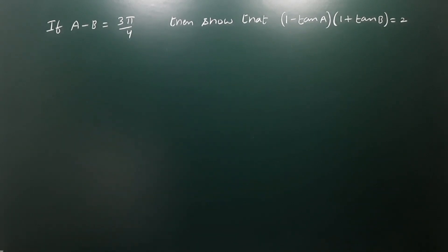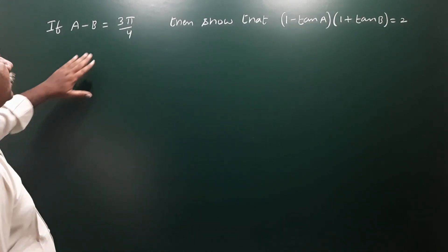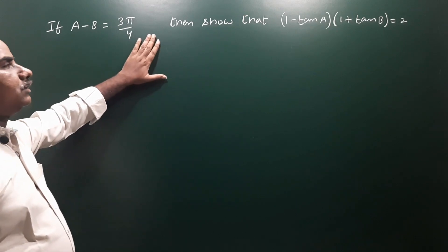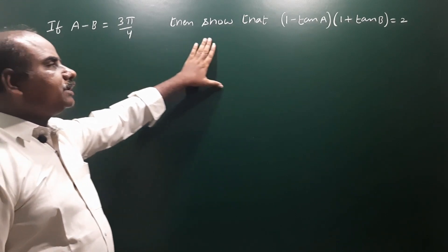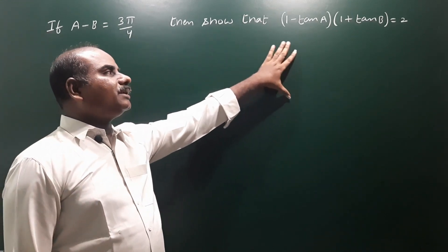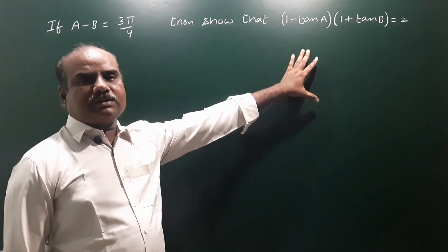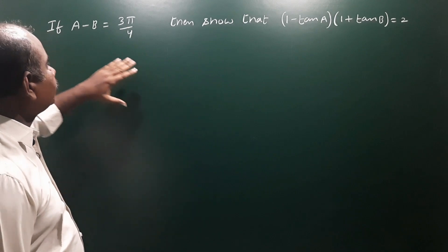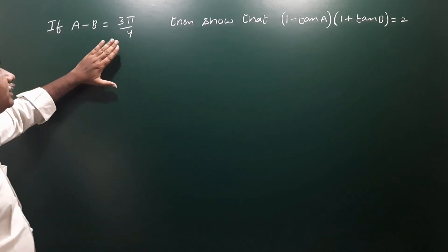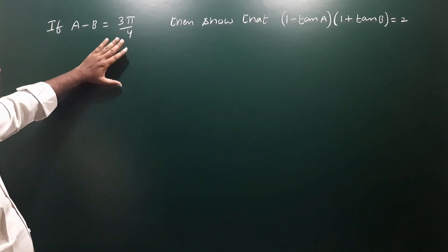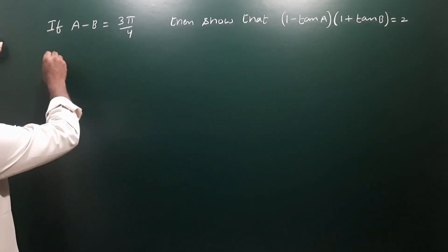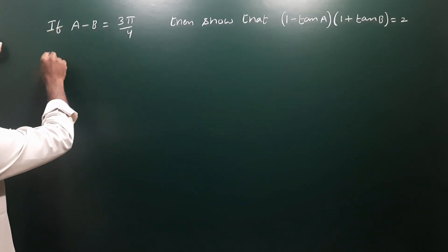If A minus B is equal to 3π/4, then show that (1 minus tan A) into (1 plus tan B) is equal to 2. Given: A minus B equals 3π/4, which is 135 degrees.